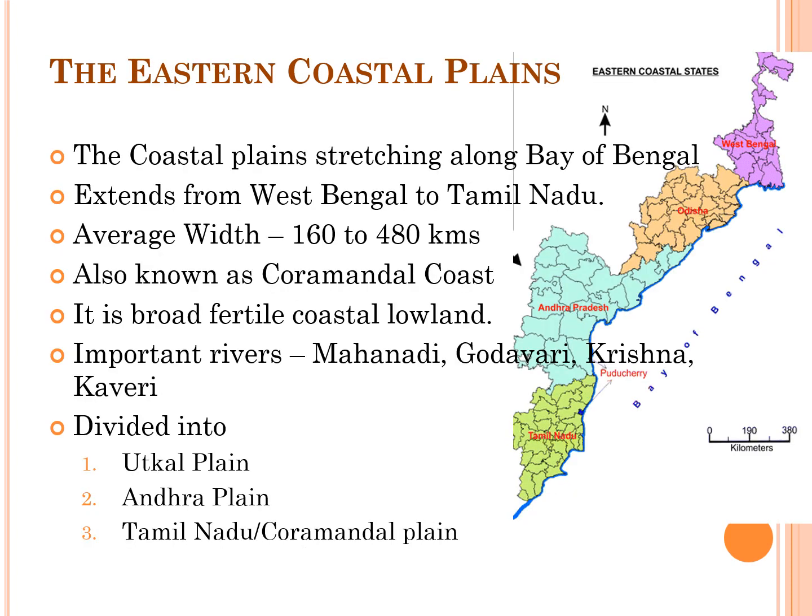The Eastern Coastal Plains stretch along the Bay of Bengal, extending from West Bengal to Tamil Nadu through Andhra Pradesh, Telangana and Odisha. The average width of the Eastern Coastal Plains is about 160 to 480 kilometers. These plains are also known as the Coromandal coast and are a broad, fertile coastal lowland. Important rivers include Mahanadi, Godavari, Krishna and Kaveri. Eastern Coastal Plains are classified into three plains: Utkal Plain, Andhra Plain, and Tamil Nadu or Coromandal Plain.